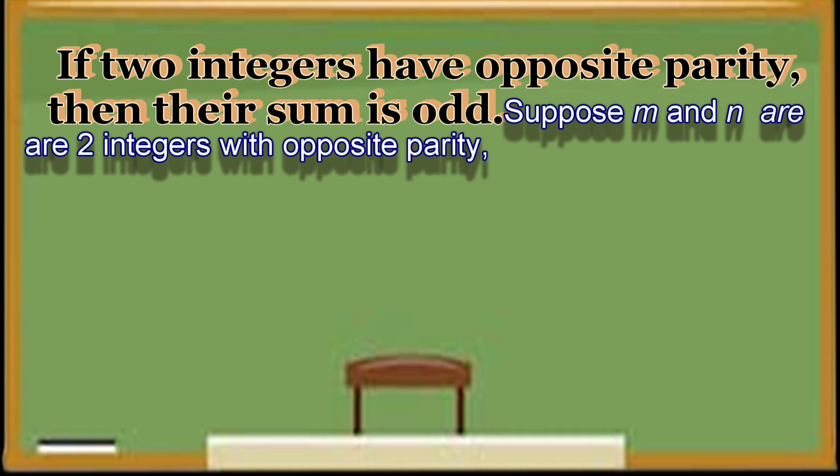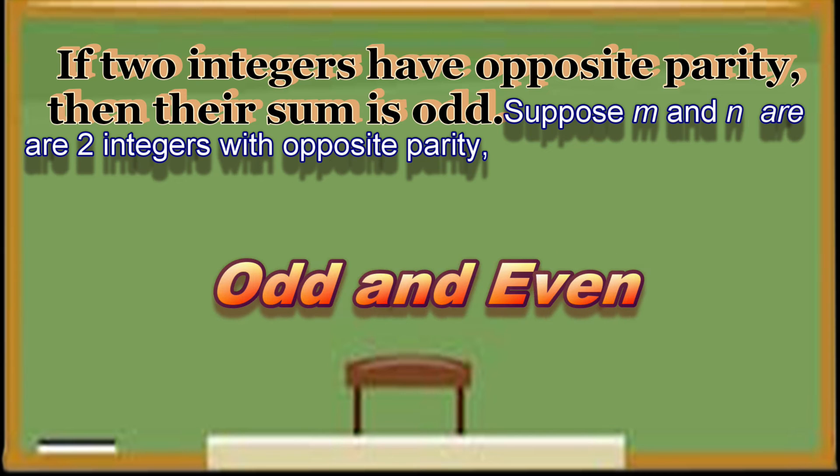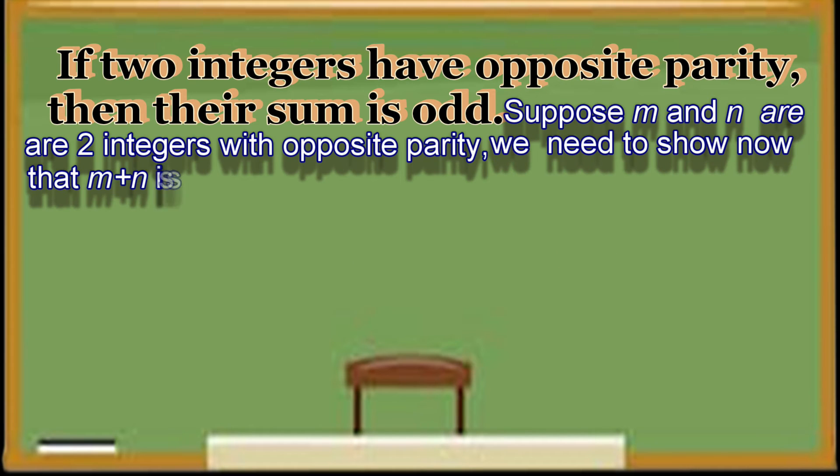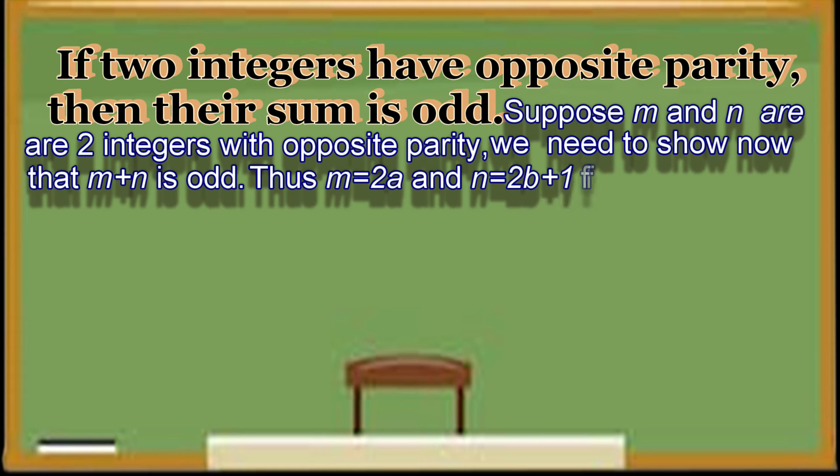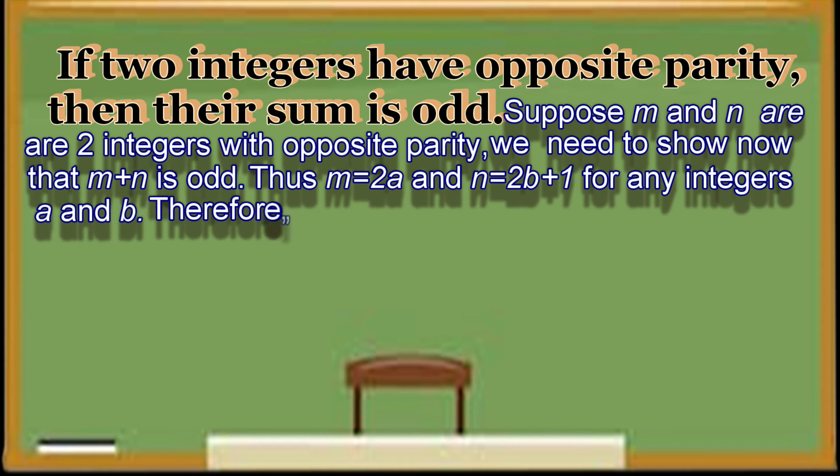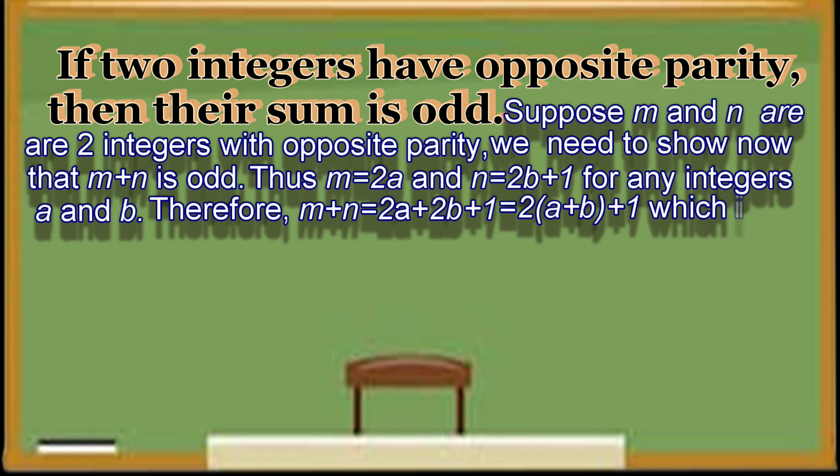The opposite parity refers to one even and one odd. We need to show that M plus N is odd. Thus, M equals 2A and N equals 2B plus 1 for some integers A and B. Therefore, M plus N equals 2A plus 2B plus 1, which equals 2 times (A plus B) plus 1. It is odd.